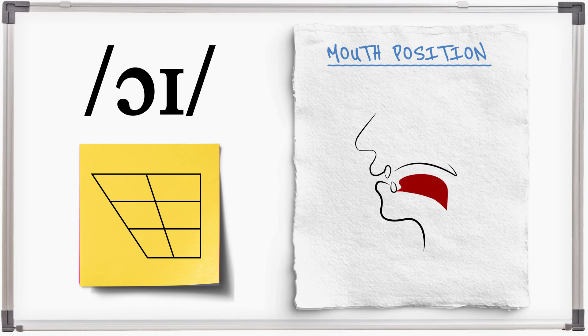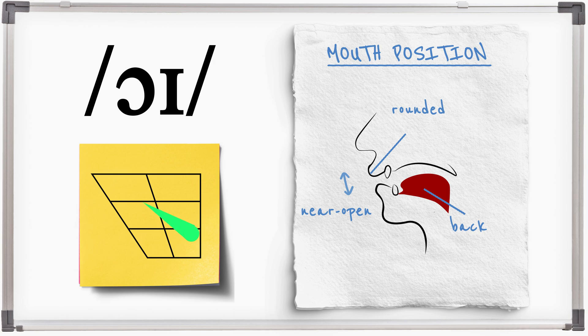OI is a diphthong vowel sound that starts in a near-open back rounded position and moves towards a front close mid position.